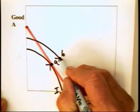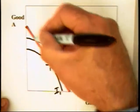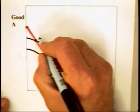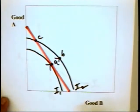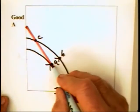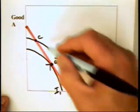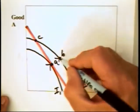B is not attainable because it's outside of the individual's budget line. But combination C is attainable. So we know that B is preferred to A. C is on the same indifference curve as B. So therefore,